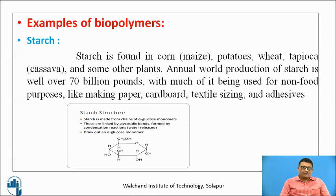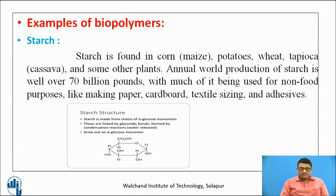Now after learning the definition, we will see some examples of biopolymers which are used to prepare different varieties of bioplastics — degradable, eco-friendly materials. Starch is one example of a biopolymer. It is found in corn, potatoes, wheat, and some other plants. Annual world production of starch is well over 70 billion pounds, much of it used for non-food purposes like making paper, cardboard, textile sizing, and adhesives. This is the structure of starch, obtained from plant origin, used as a major source to prepare biopolymers and bioplastics.